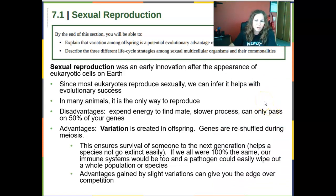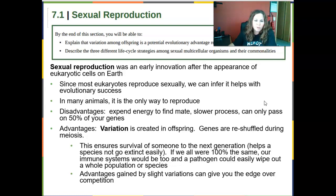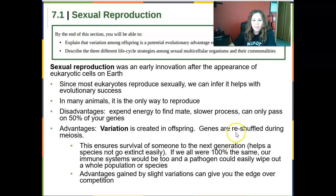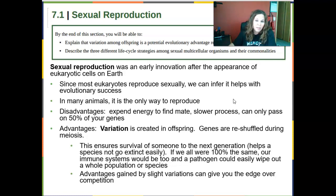Sexual reproduction was an early innovation after the appearance of eukaryotic cells on Earth. The first cells would have reproduced only asexually, but sexual reproduction came not long thereafter and has stuck around. Therefore, there must be some evolutionary advantage to why it makes species so successful — we infer, based on evidence, that sexual reproduction helps with evolutionary success. In many organisms, it's the only way to reproduce, including in humans.